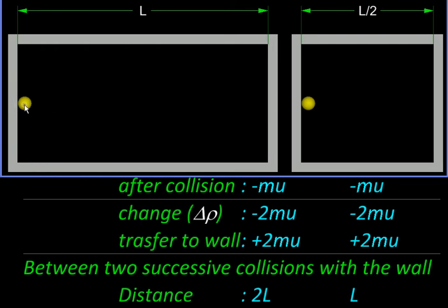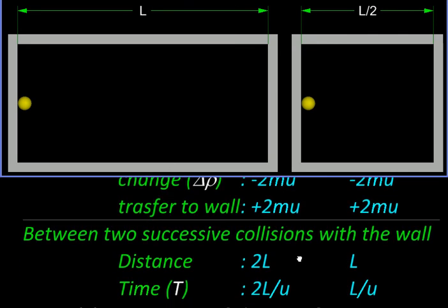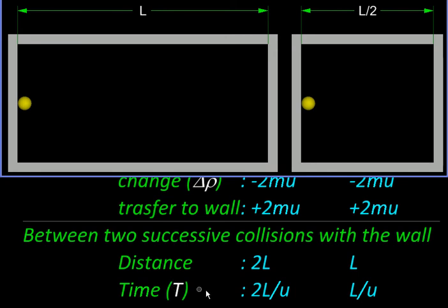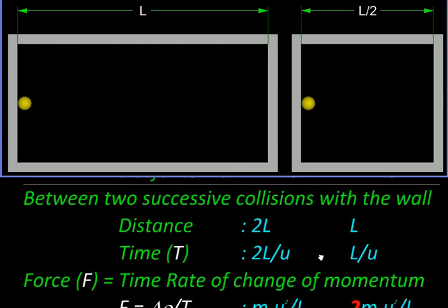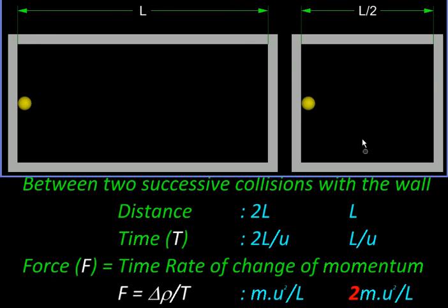And between two successive collisions, the time or the distance covered by the molecules in this case from here to here and back is 2L. But in this one, in this case, it will be L by 2 and L by 2, just L. Since this distance is covered with the same speed U, we can get the time as 2L upon U here, and L upon U here. You can see the time taken here between two successive collisions is half.